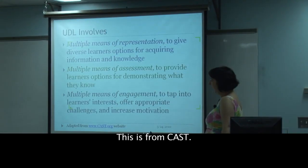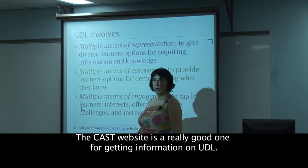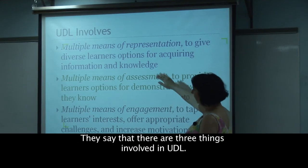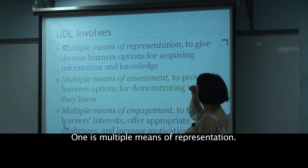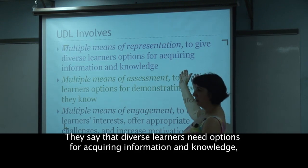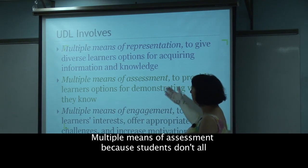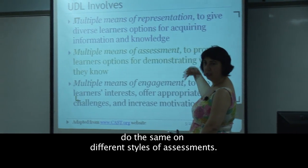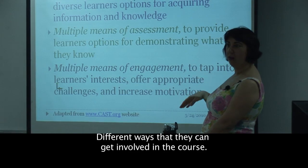This is from CAST. The CAST website is a really good one for getting information on UDL. They identify three main areas UDL involves: multiple means of representation, because diverse learners need options for acquiring information and knowledge; multiple means of assessment, because students don't all perform the same on different styles of assessments; and multiple means of engagement — different ways students can get involved in the course.